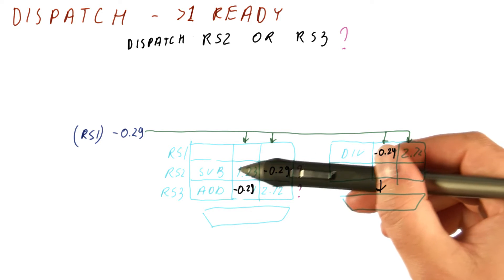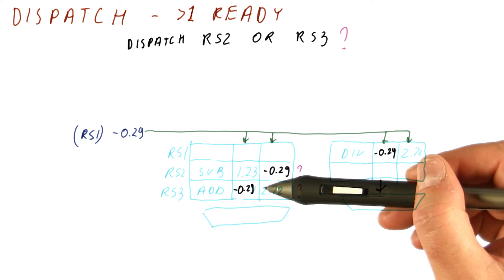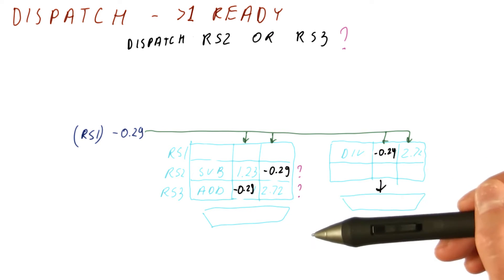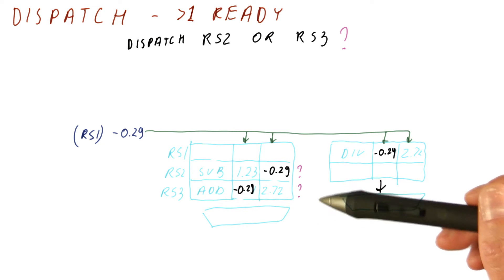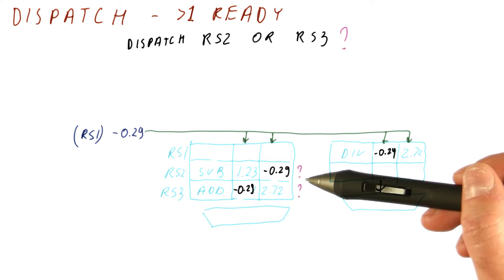Well, ideally we will dispatch that instruction that allows us to get to future instructions as early as possible. So basically, we would choose the instruction that leads to the highest performance.